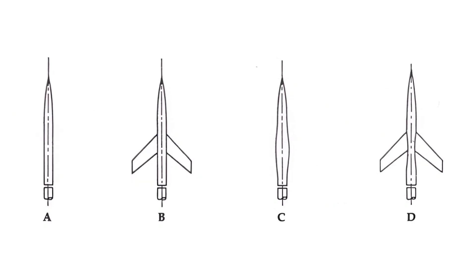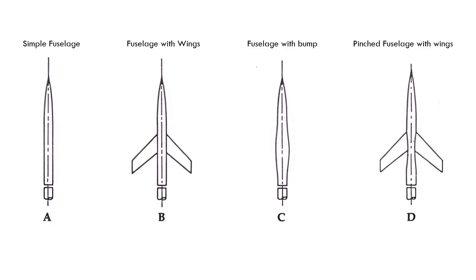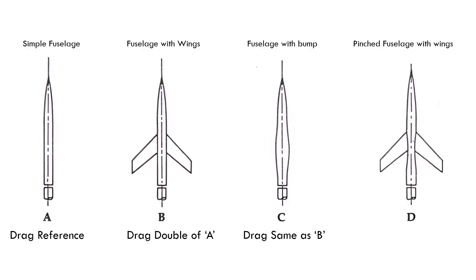Dr. Whitcomb tested four different models in a transonic wind tunnel: a plain cylindrical fuselage, the same fuselage with wings attached, a version with a bulge, and another with a narrowed or pinched section where the wings were placed. He observed that simply adding wings to the cylinder doubled the drag, and adding a bulge of equivalent volume to that of the wings had the same effect.